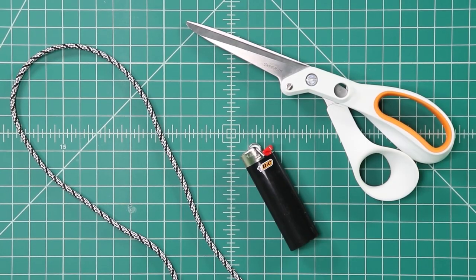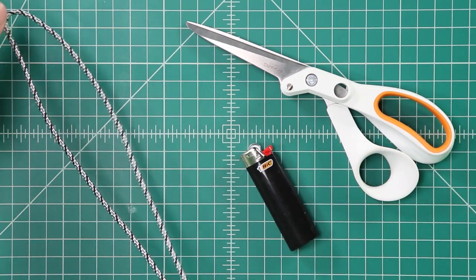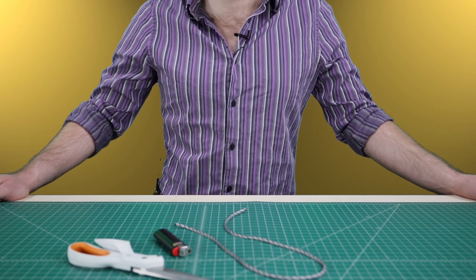So for this project today you're only going to need about two feet of paracord, any scraps you have lying around will do. You're also going to need a lighter and a scissor. Let's dive right in.